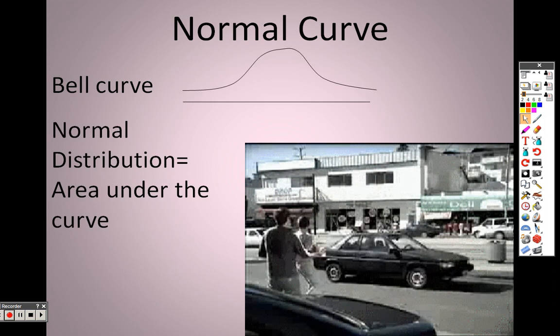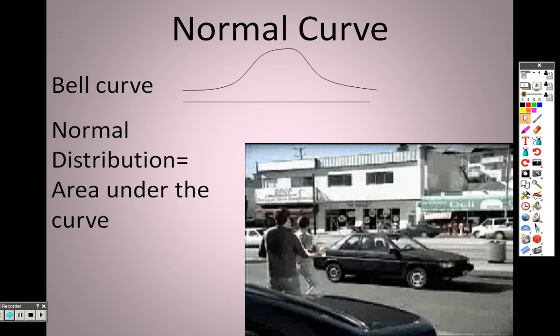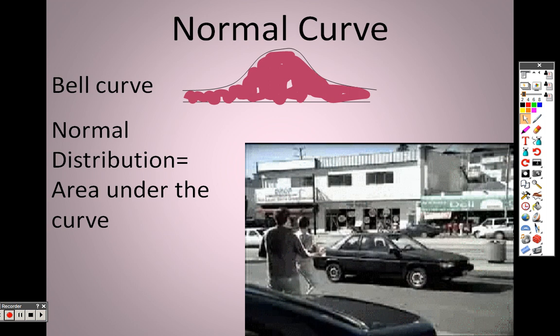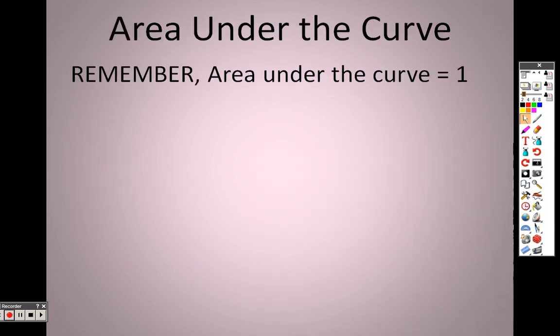Normal distribution is the area under the curve. When we talk about normal distribution, we are talking about all that area underneath that curve. The area under the curve equals one because we are talking about percents — it all adds up to 100%, so all those decimals add together to give you a total of one.